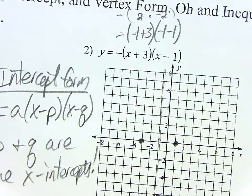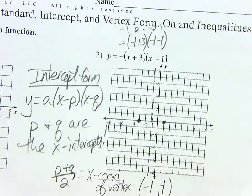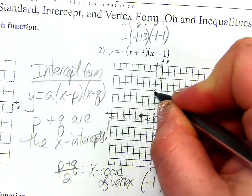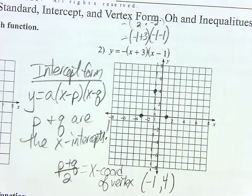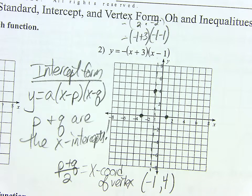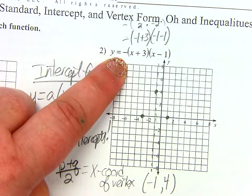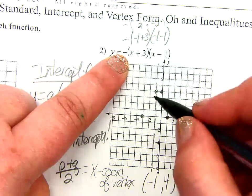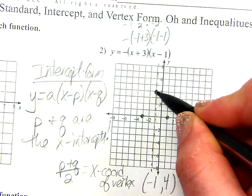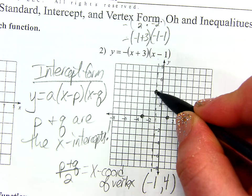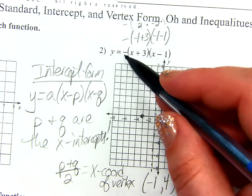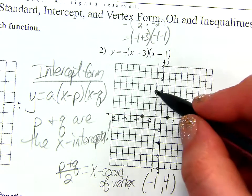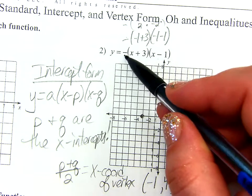Now I just go ahead and plug in negative one. Sometimes this trips kids up because there's two X's. You just plug negative in for both of them. So I'm going to do negative, negative one plus three, negative one minus one. So I would do what's in the parentheses first. Negative one plus three is two. Negative one minus one is negative two. Two times negative two is negative four.